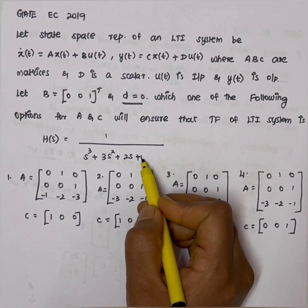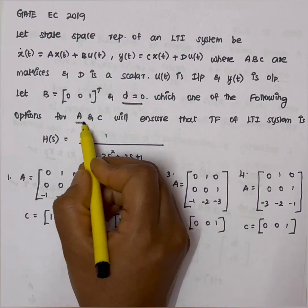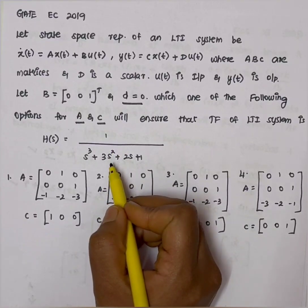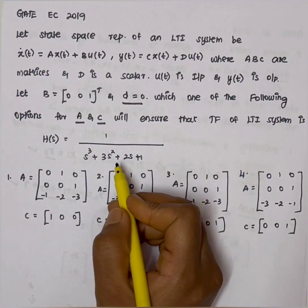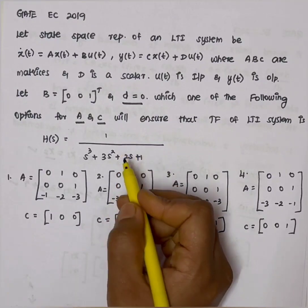So the question is asking which A and C matrix values will match this H of s. We need to find this - that is our actual question. There's a shortcut we can directly use to solve this.